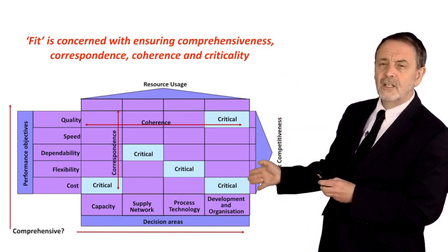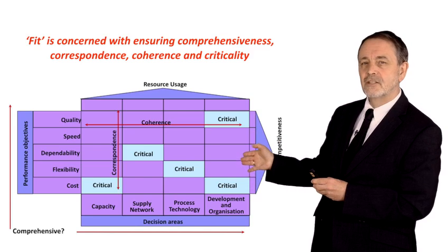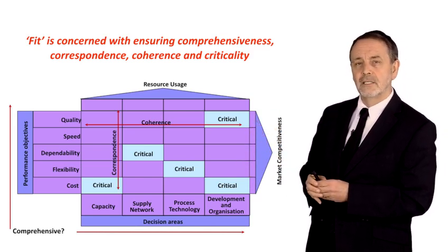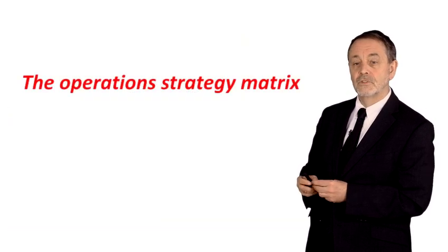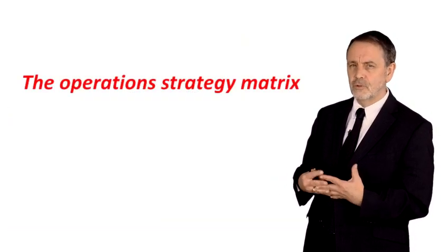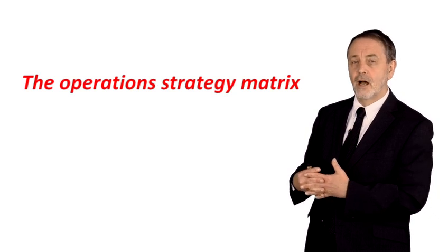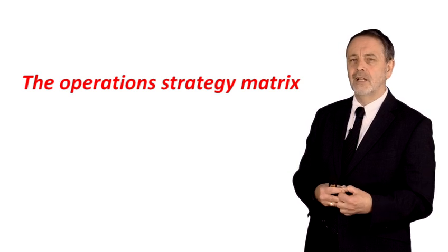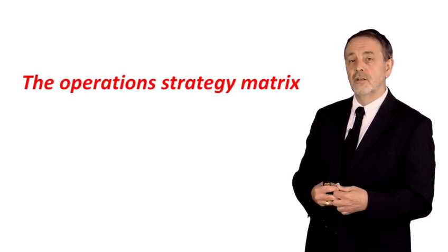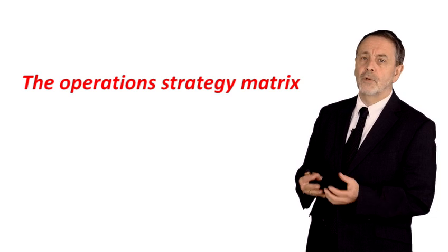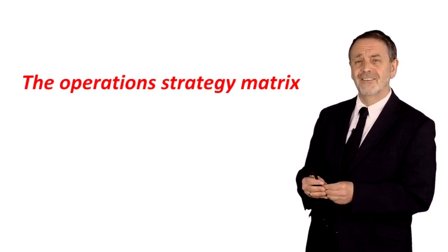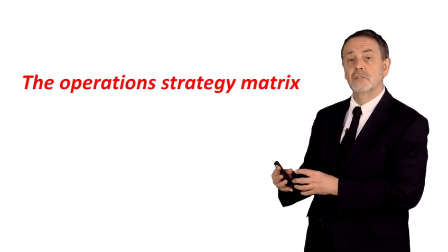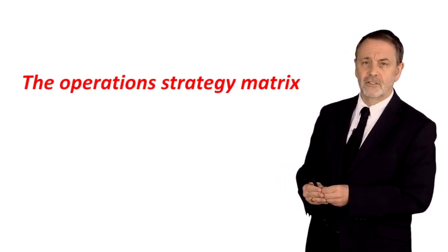And then the final dimension is correspondence — in other words, the decisions we take about capacity strategy should reflect how we compete in our markets. So in a nutshell, when you're doing your final project analysis, I want you to use the operations strategy matrix. I want you to be thinking about how well your chosen organization meets these criteria of comprehensiveness, correspondence, coherence, and criticality. I also want you to use the matrix to help propose areas where there could be potential improvement.